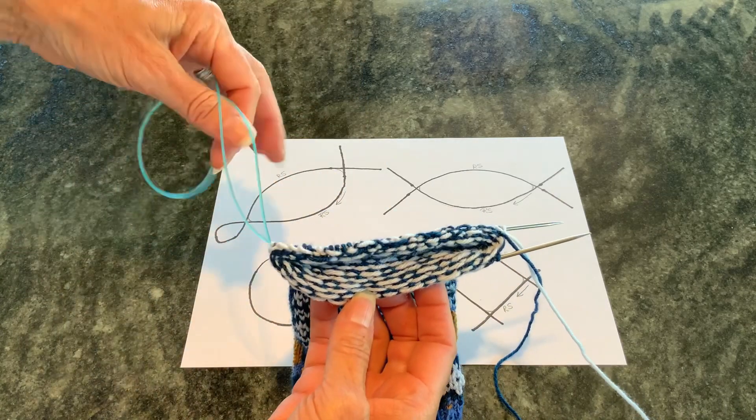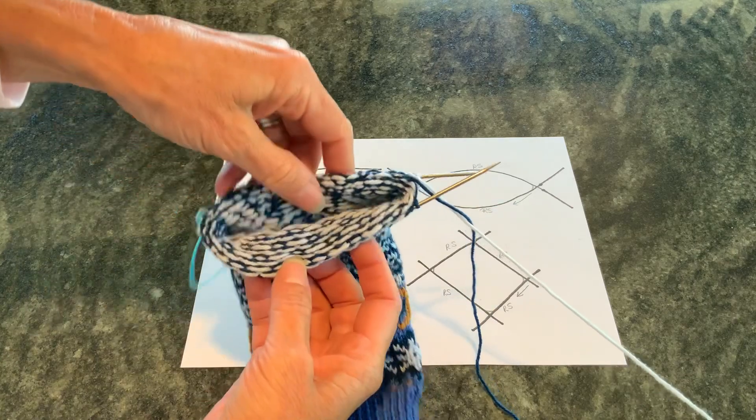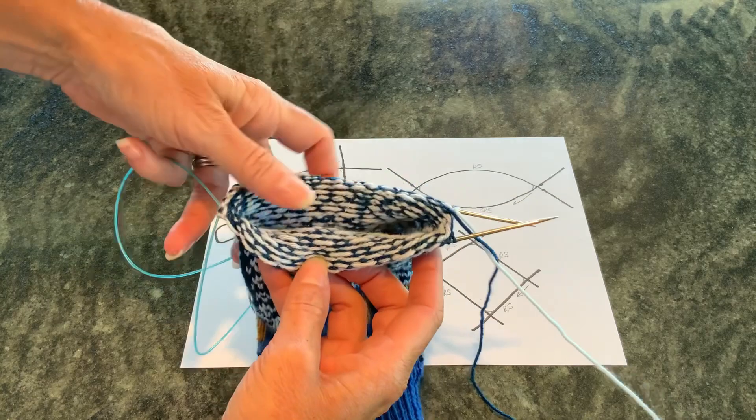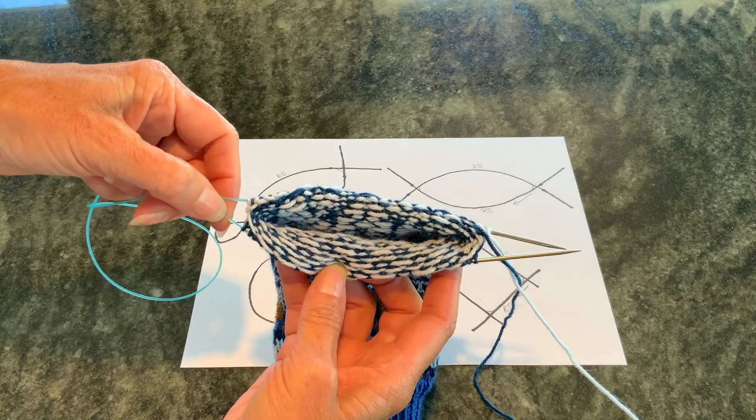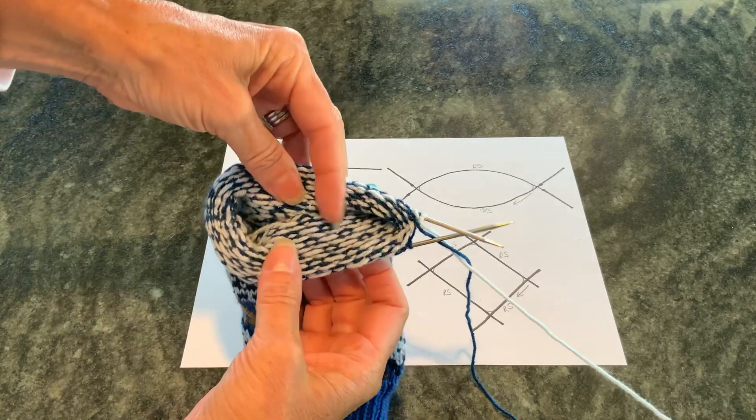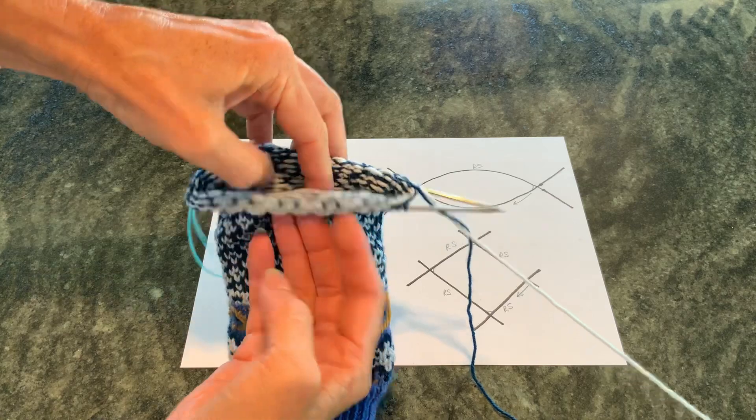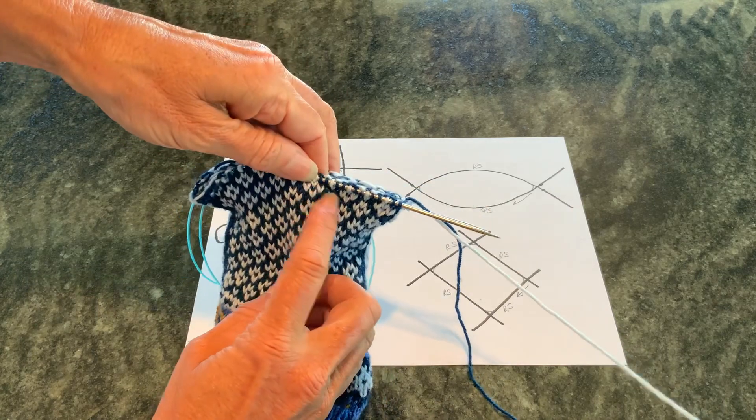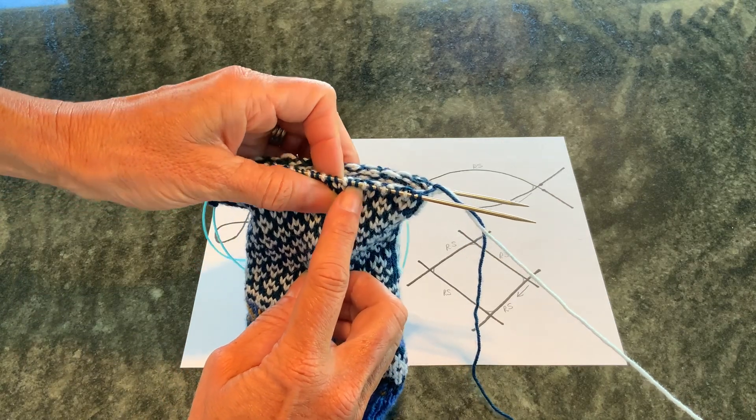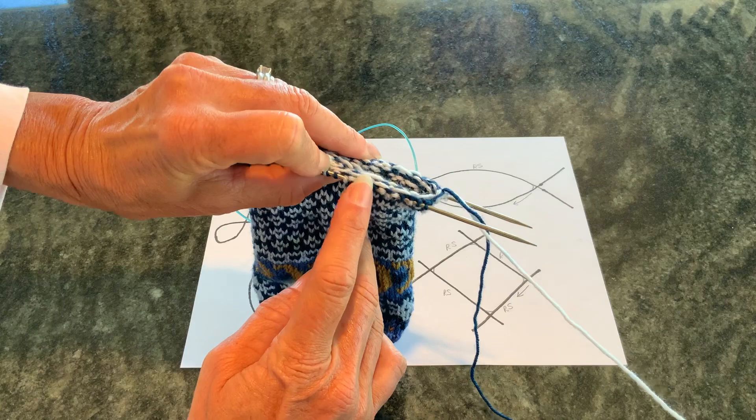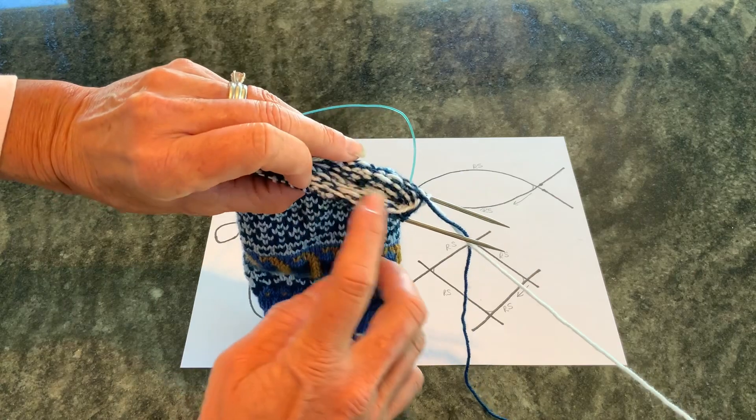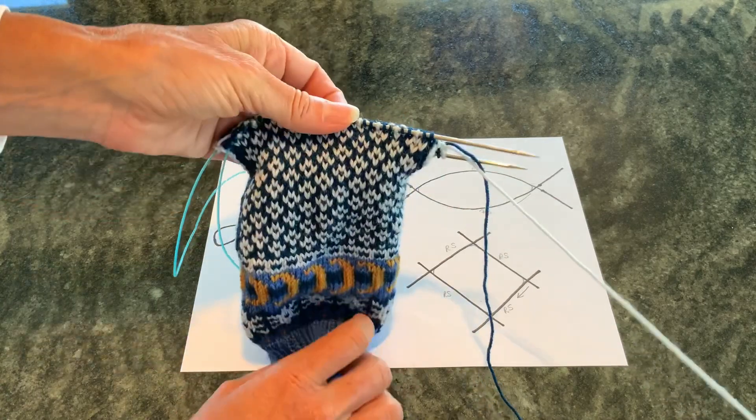For each of these examples, we're looking down into the project. This is a magic loop. I've got a 32-inch circular needle and my stitches. Here's the little gaps I'm talking about. Here's my right side and my inside, and this is where my floats are. The floats are the color that's not being used to knit with at the time.